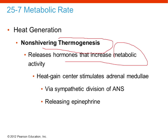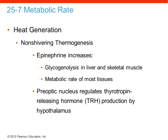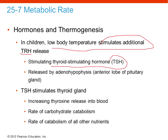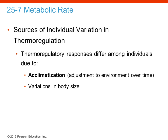Non-shivering thermogenesis uses hormones to increase metabolic activity in cells other than skeletal muscle. Releasing epinephrine through sympathetic activation raises metabolic activity and increases glycogenolysis. Regarding hormones and thermogenesis: low body temperature stimulates TRH release, which stimulates TSH from the pituitary, which stimulates the thyroid gland to release T3 and T4. This increases sugar catabolism and raises the metabolic rate, helping increase body temperature.